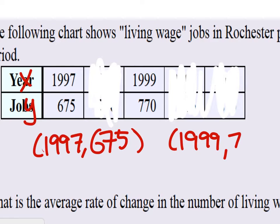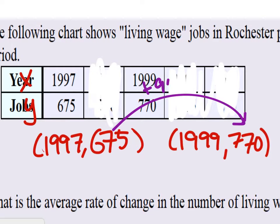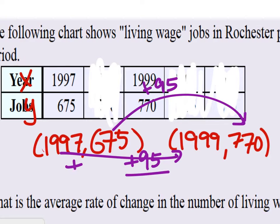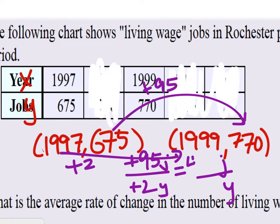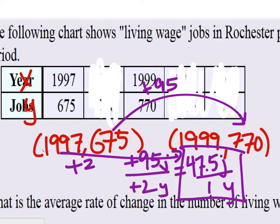1999 and 770. The change in the Ys — this one would have to add 95 — so on our fraction, that's our numerator: 95. And the change in the Xs — that's not a very good rainbow, but we added two years. So overall, this is jobs per year, so this one also will be jobs per year. What is that, 47.5? Jobs for every one year. That's one way to write it. If you wanted to write the words, you could as well.